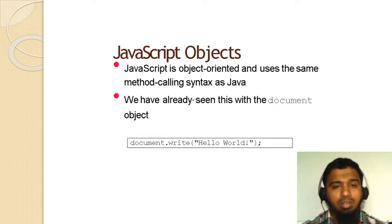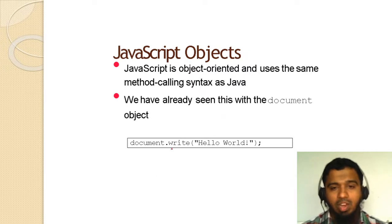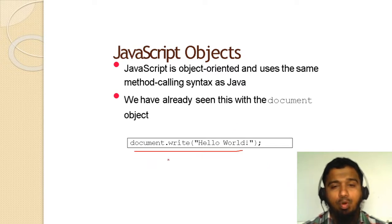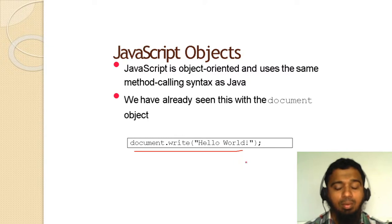JavaScript is object-oriented and uses the same method-calling syntax as Java. We have already seen this with the document object — document.write. When you write document.write('Hello'), you get that message displayed on the page.